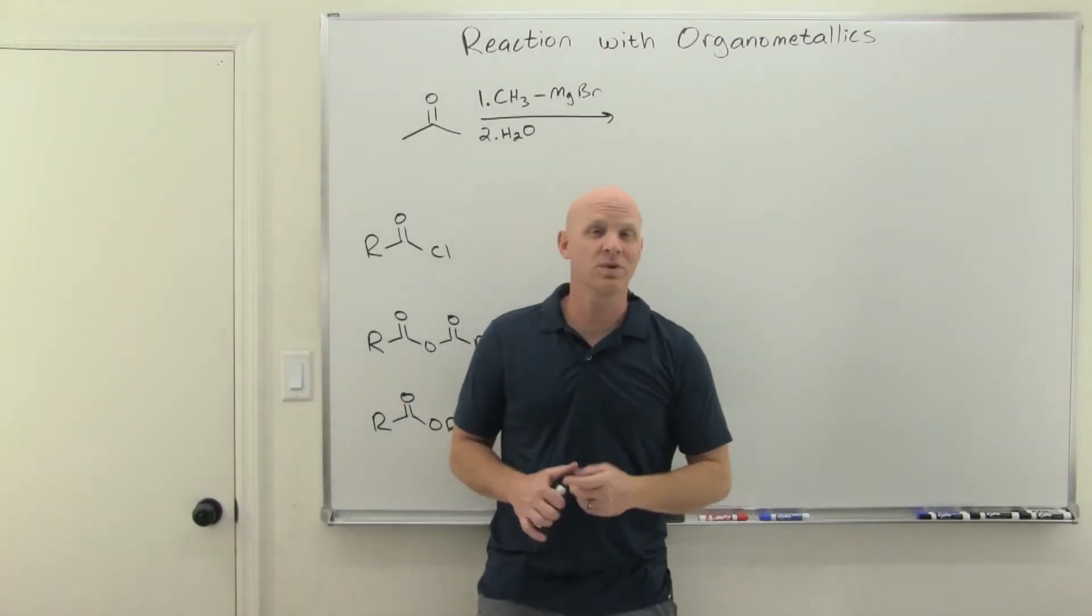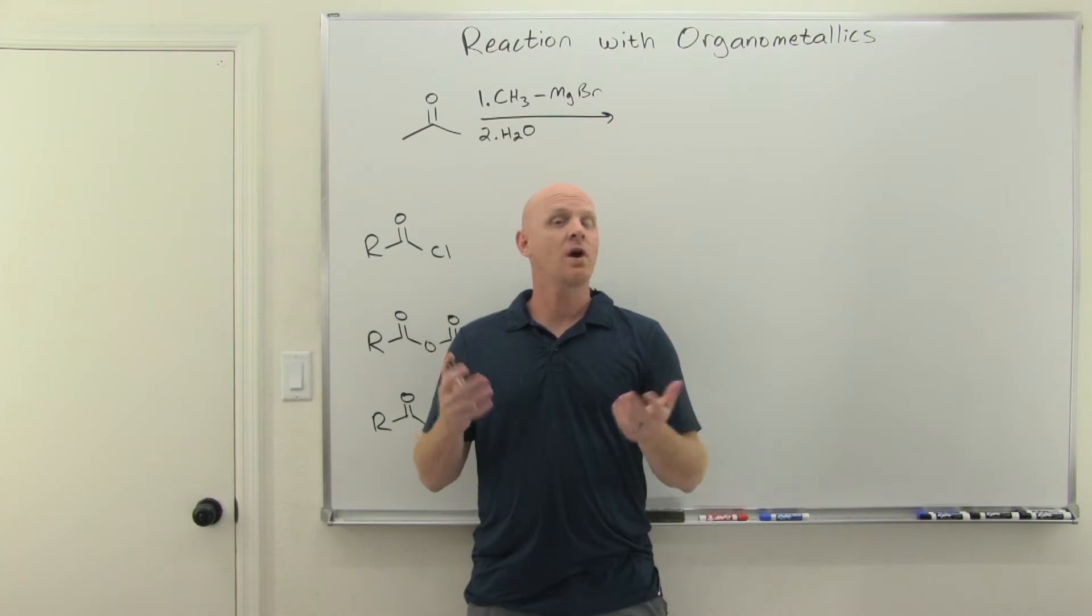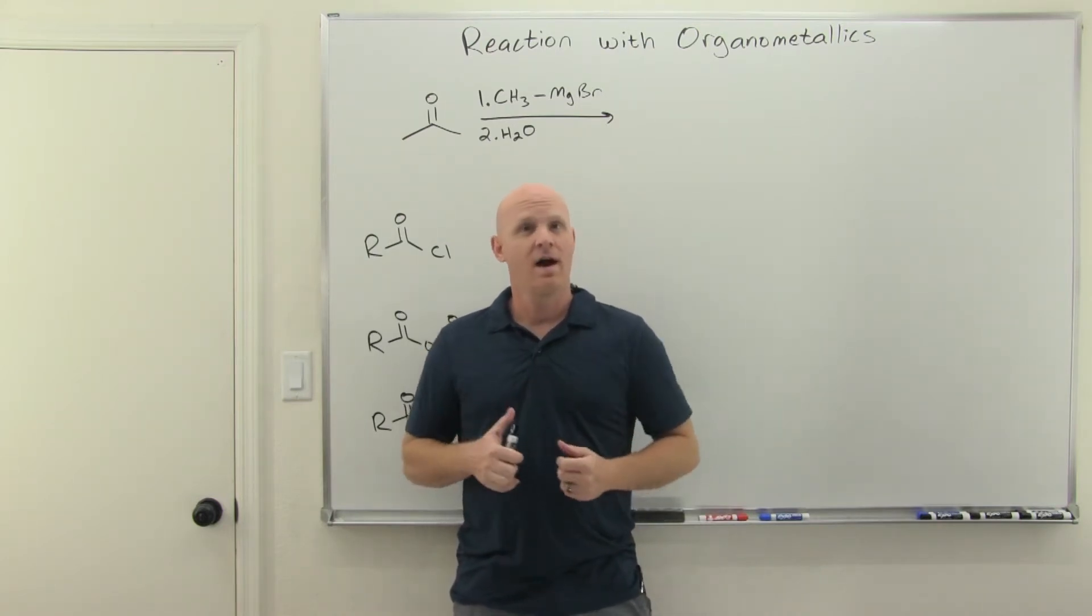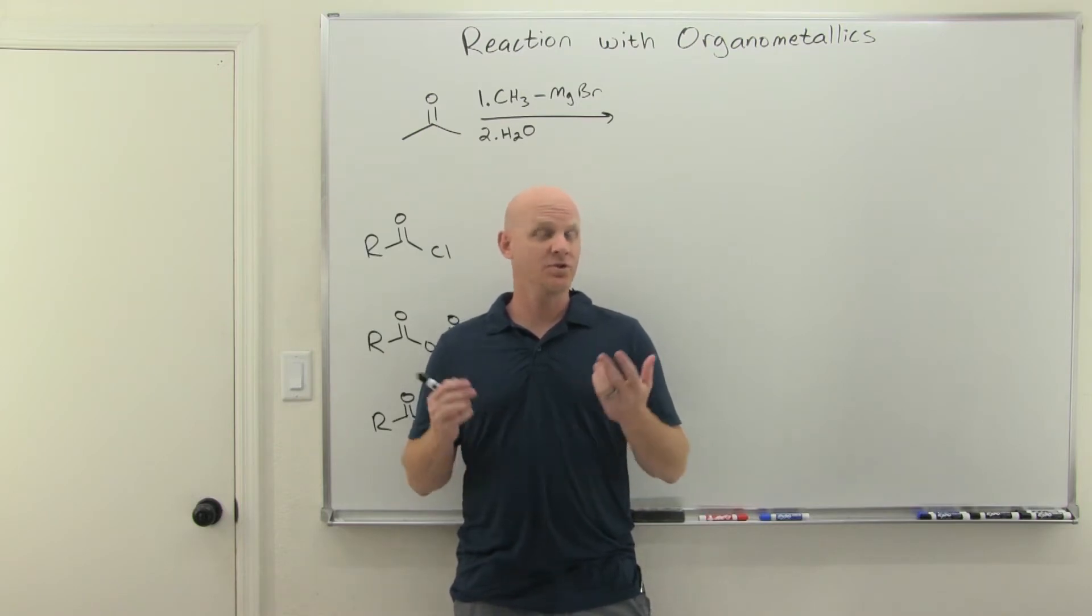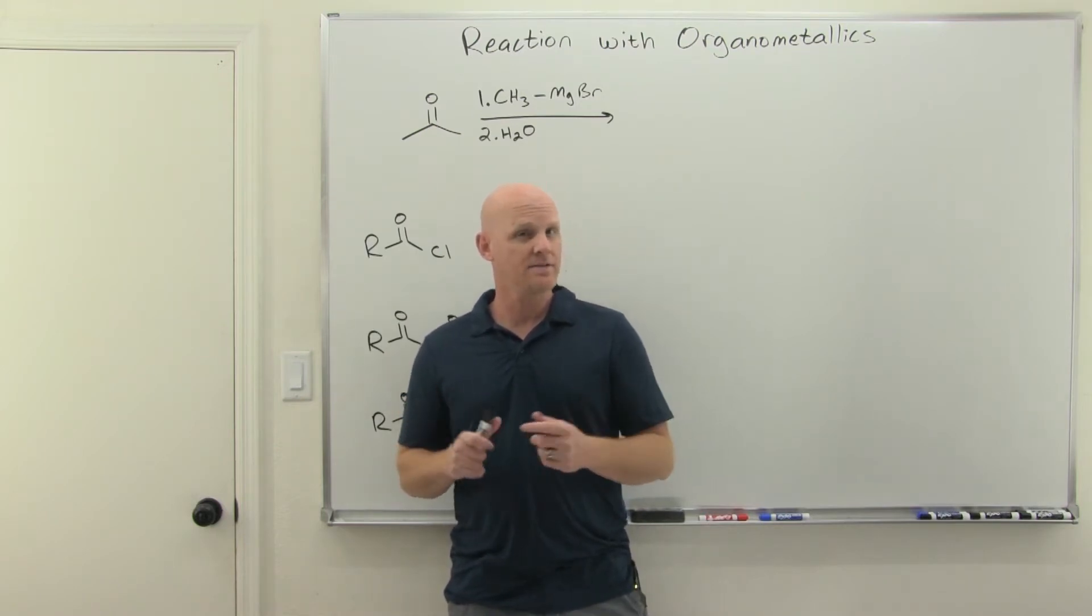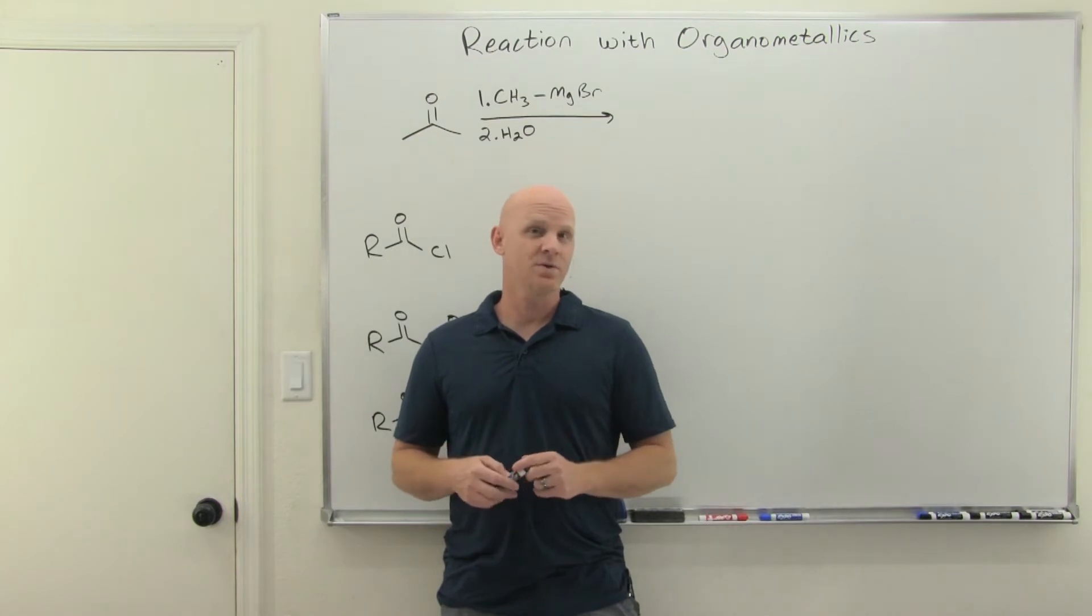Reaction with organometallics. In this lesson we're going to take a look at how some of the carboxylic acid derivatives, particularly acid chlorides and anhydrides and esters, react with two major classes of organometallics, the Grignard reagent, organomagnesium halides, as well as the Gilman reagent, organocuprates.